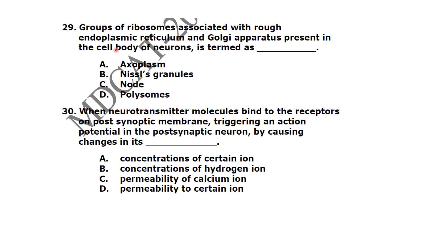A group of ribosomes associated with rough endoplasmic reticulum and Golgi apparatus present in the cell body of a neuron is termed as Nissl granules. When neurotransmitter molecules bind to receptors on the post-synaptic membrane, they trigger an action potential in the post-synaptic neuron by causing changes in its permeability to certain ions.